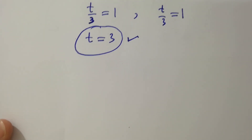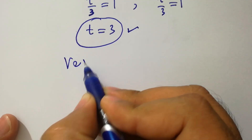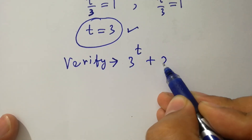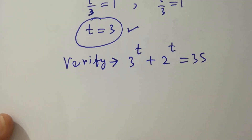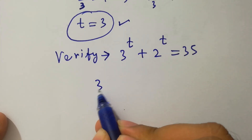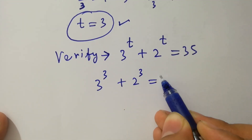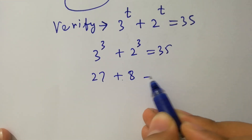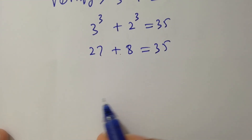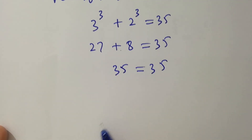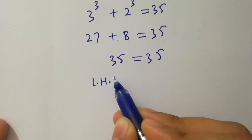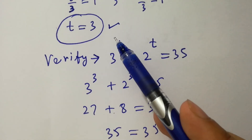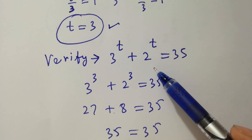Let's verify: substituting t equals 3 into 3 to the power t plus 2 to the power t equals 35, we get 3 to the power 3 plus 2 to the power 3 equals 35. That is 27 plus 8 equals 35. Left hand side equals right hand side, which confirms that the value of t equals 3 satisfies the equation 3 to the power t plus 2 to the power t equals 35.